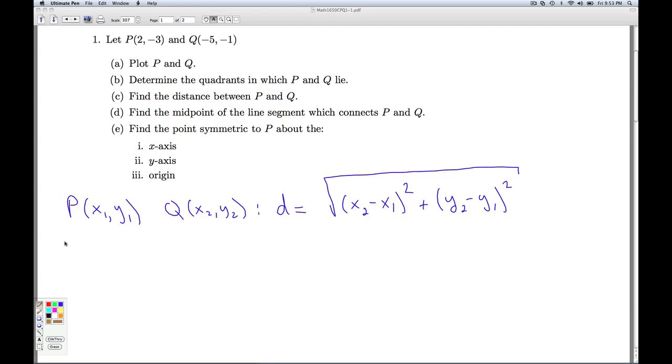So in our case, the point P, the first point is 2, negative 3, and the second point Q is negative 5, negative 1. So we can think of X1, the X-coordinate of the first point, being 2. Y1, the Y-coordinate of the first point, is negative 3. Negative 5 is the X-coordinate of the second point, so that's X2. And negative 1 is the Y-coordinate of the second point, Y2.